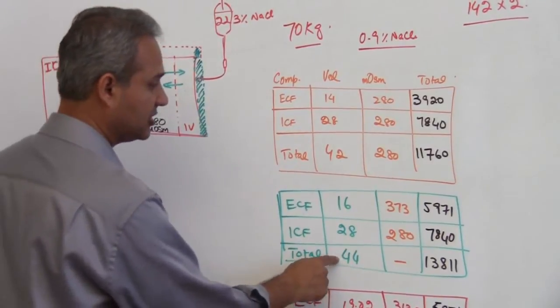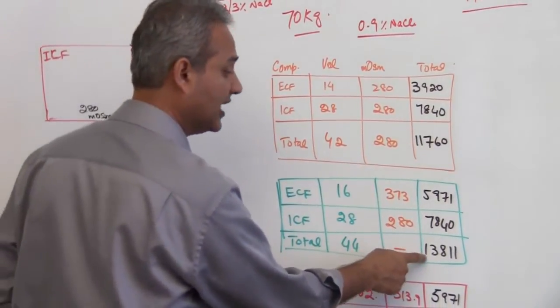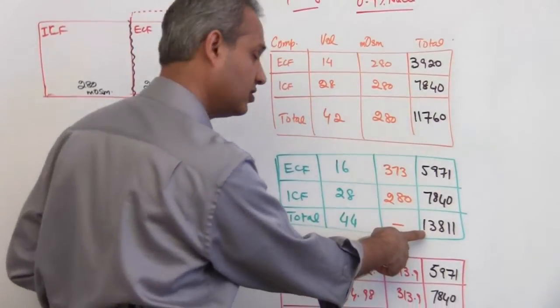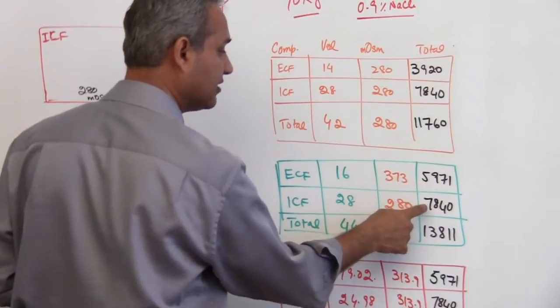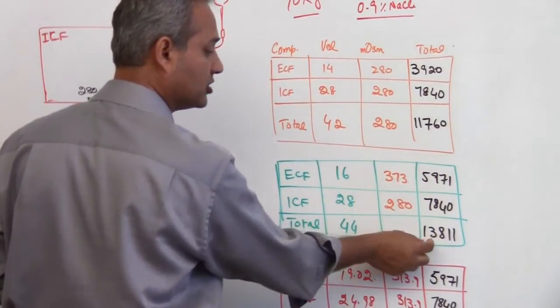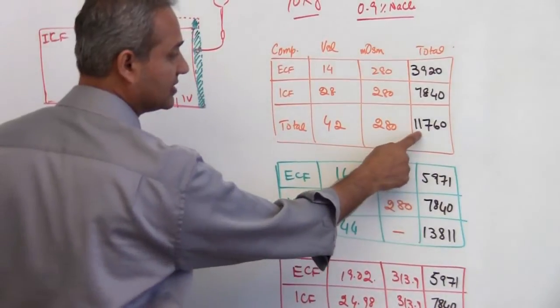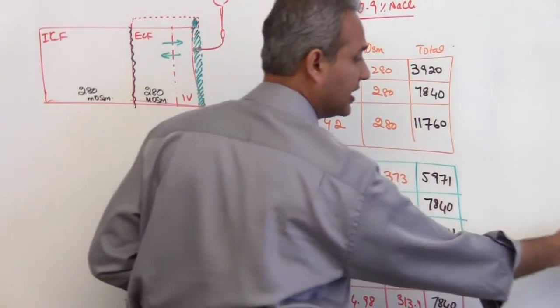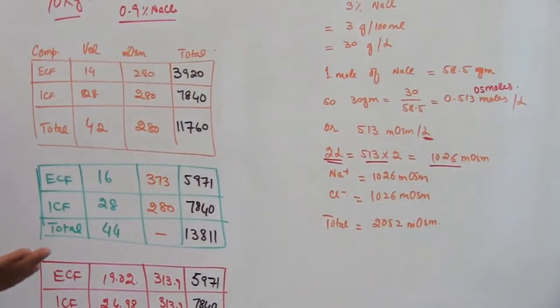Total fluid changed - instead of 42 liters, now it is 44 liters. Total milliosmoles, not osmolarity but milliosmoles, that changed. You add the ICF and ECF milliosmoles and that would give you the total milliosmoles. Of course, this number now has an additional 2052 milliosmoles added to it.